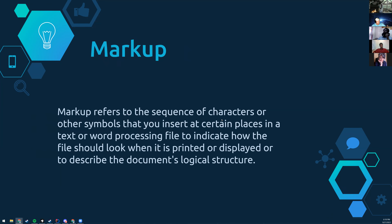The next part of HTML is the markup. What is markup? Markup refers to the sequence of characters or other symbols that you insert at certain places in a text or Word file to indicate how the file should look when it's displayed. It also describes its own logical structure. HTML is not the only markup language — there's also XML and a few others. Basically, markup is a fancy way of saying that the code describes itself. For example, the header element is describing itself — it's like 'I am the header, this is what I do.'